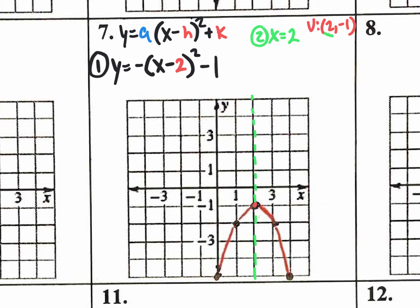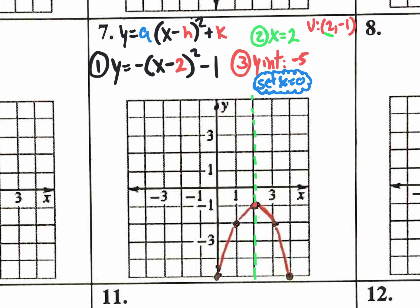It also says to find your y-intercept. Do you remember from algebra one how to find the y-intercept? You could visually see that it crosses at negative five. But if you cannot see it visually, you need to set x equal to zero and solve. For x-intercepts, you would set y equal to zero and solve.